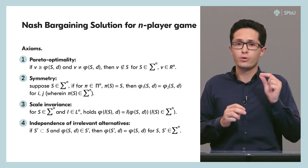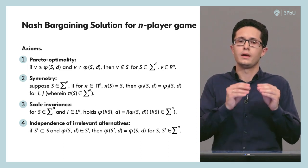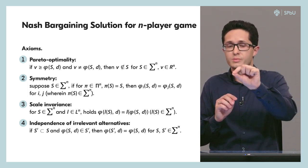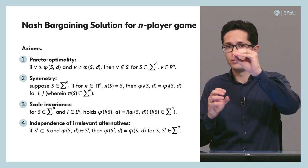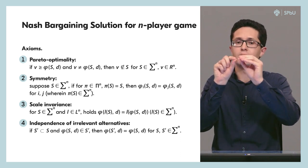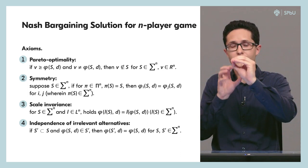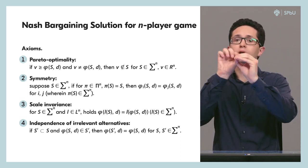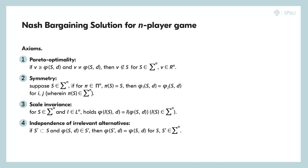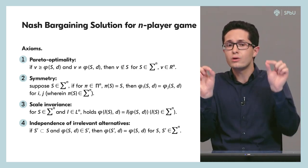The fourth axiom is called the independence of irrelevant alternatives. It says that if we consider the initial bargaining set and calculate the bargaining solution, and then take a subset of the initial bargaining set that still includes that solution, the bargaining solution recalculated on this subset will be the same as on the initial set. This means the bargaining solution depends only on the relevant alternatives or outcomes.